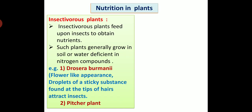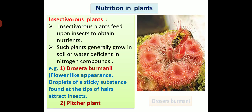Next type of nutrition in plant is insectivorous plants. Insectivorous plants feed upon insects to obtain nutrients. Such plants generally grow in soil or water deficient in nitrogen compounds. For example, drosera burmanii. This plant has flower-like appearance. Droplets of a sticky substance found at the tips of hairs attract insects. In this diagram you can see the attractive flower-like plant of drosera burmanii. Second example of insectivorous plant is pitcher plant. So drosera burmanii and pitcher plant are insectivorous plants.